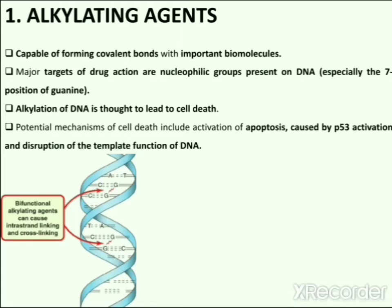Potential mechanisms of cell death include activation of apoptosis caused by p53 activation, and disruption of the template function of DNA. Apoptosis represents the death of cells which occurs as a normal and controlled part of an organism's growth or development, while p53, also known as TP53 or tumor protein, is a gene that codes for a protein that regulates the cell cycle and hence functions as a tumor suppressor. It is very important for cells in multicellular organisms to suppress cancer.